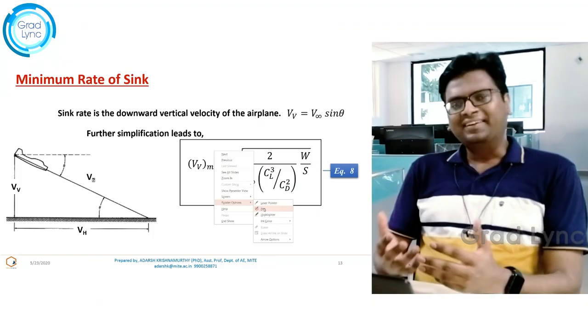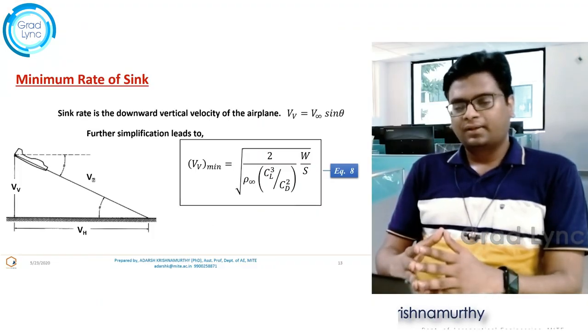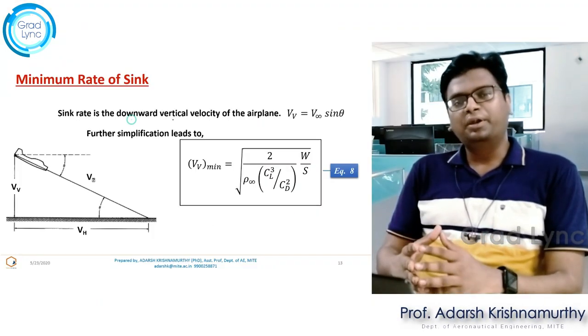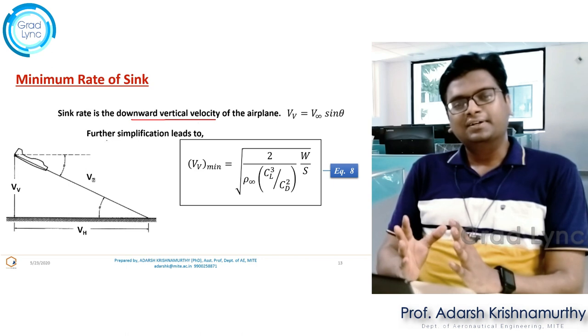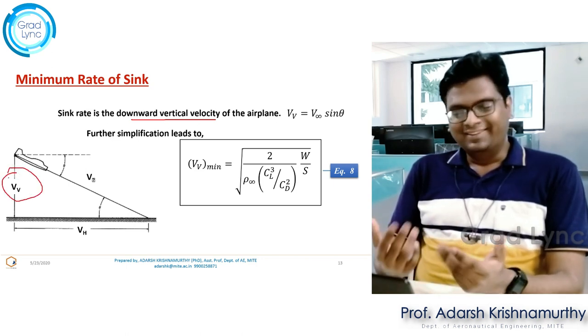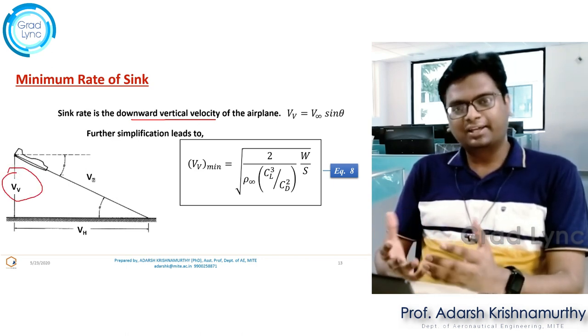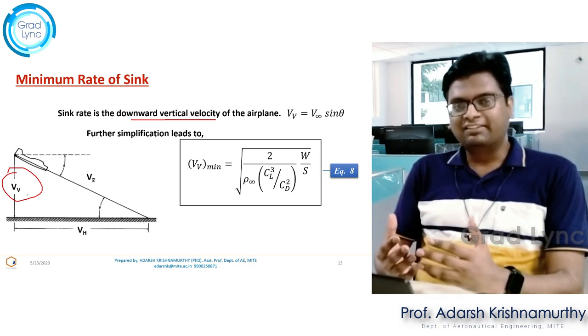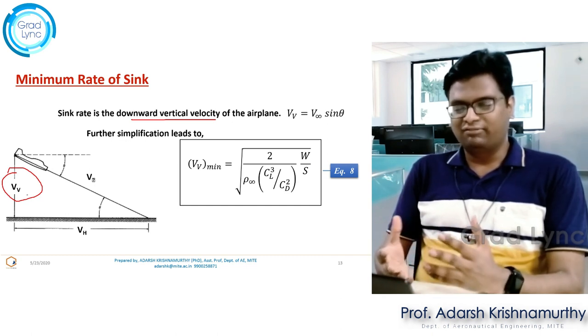In this particular lecture, we will be understanding something called minimum rate of sink, and a problem related to this. Sink rate is nothing but the vertical component of the free stream velocity, or in this particular case, it is the vertical component of the equilibrium glide velocity.